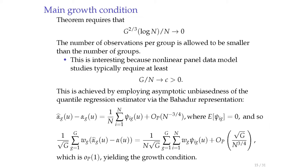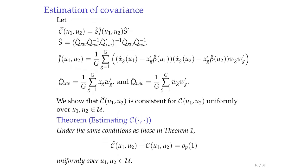Showing that this term goes to zero uniformly in u is difficult because the influence function for a quantile regression estimator is not continuous. But it's doable and we have it.